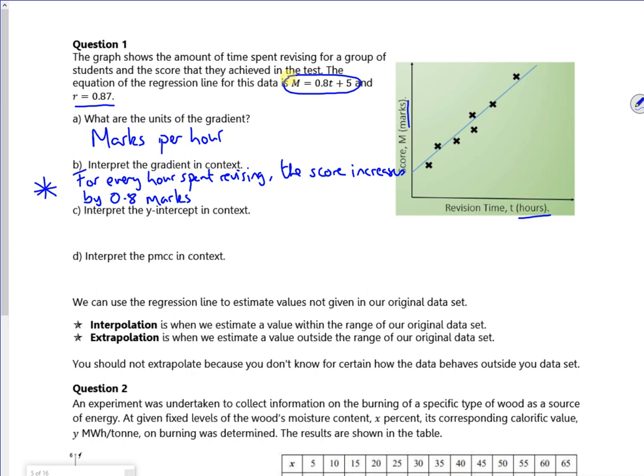So then it says, interpret the y-intercept in context. So I've got a y-intercept here of 5. So what does that mean? If I spend no time revising, I'm going to get a score of 5. So we've got a score of 5 marks.